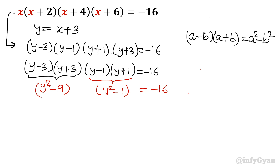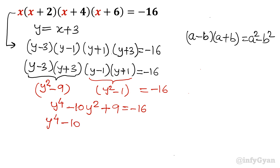Expanding (y²-9)(y²-1) gives y⁴ minus 10y² plus 9 equal to negative 16. Adding 16 to both sides gives y⁴ minus 10y² plus 25 equal to 0.